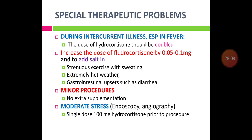Special therapeutic problems: patients already on treatment for adrenal insufficiency who develop illness, undergo surgery, or experience stress require special precaution. If a patient develops an intercurrent illness like fever, double the dose of hydrocortisone — e.g., from 10 mg to 20 mg. In situations of strenuous exercise with sweating, extreme hot weather, or gastrointestinal upset, increase the dose of fludrocortisone by 0.05–0.1 mg and add salt.